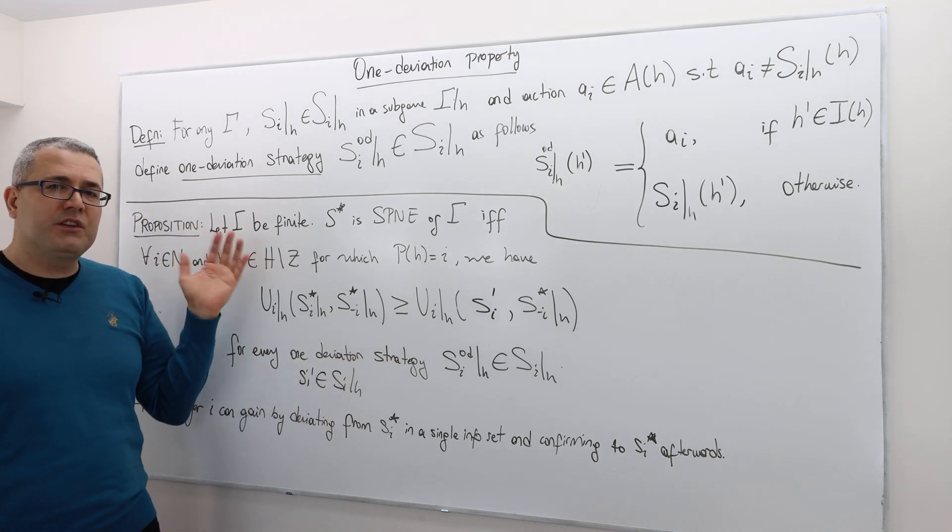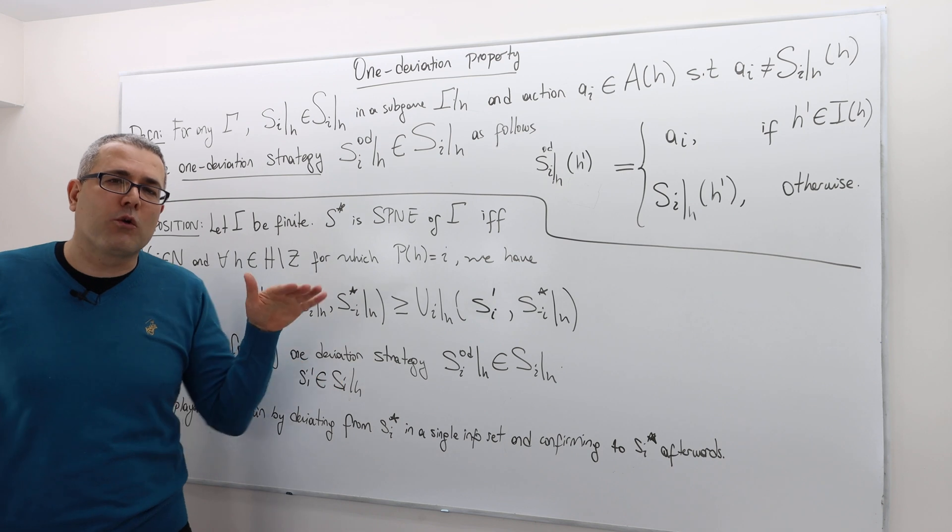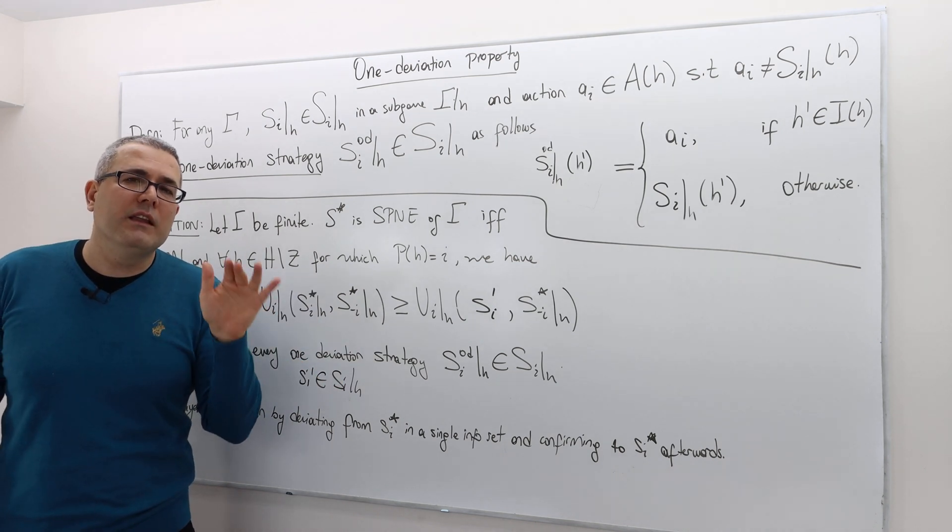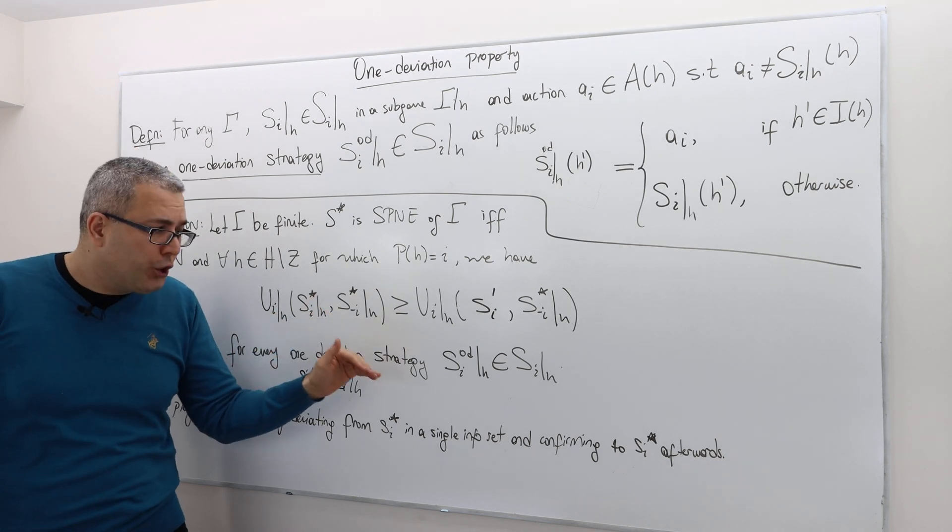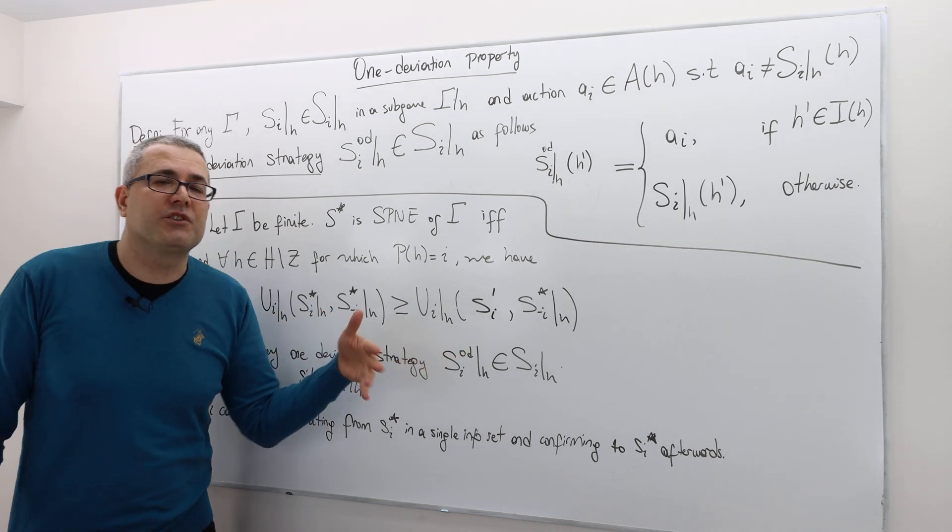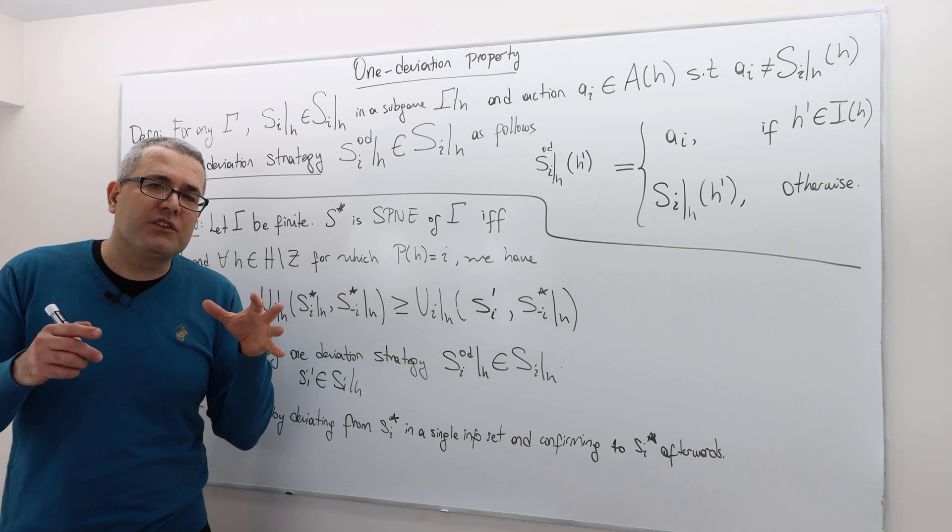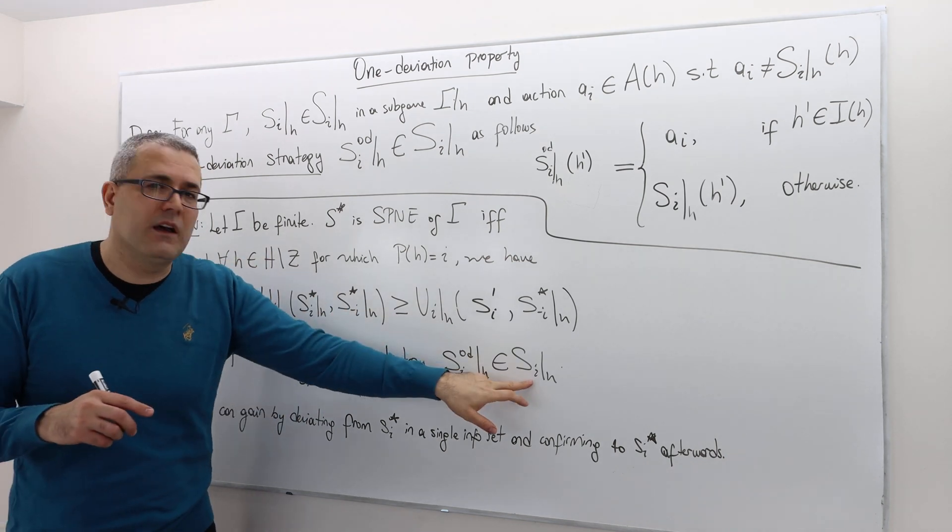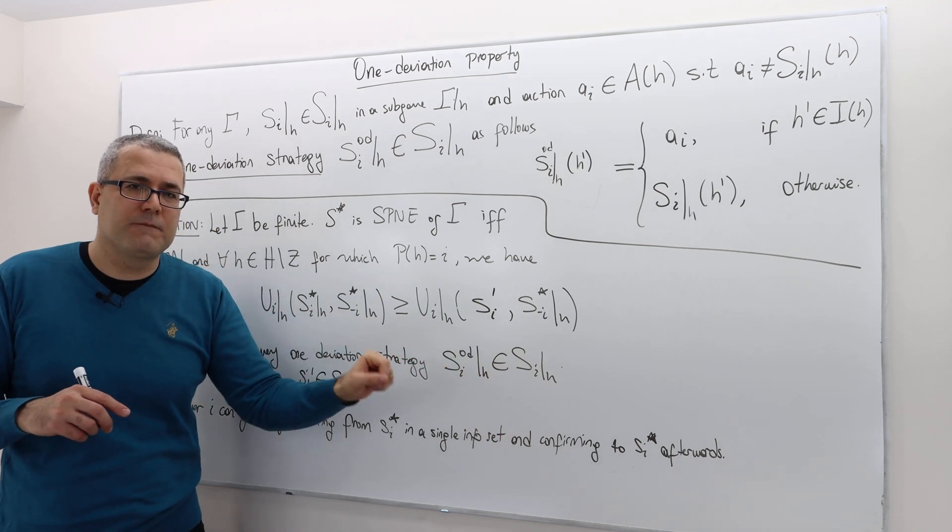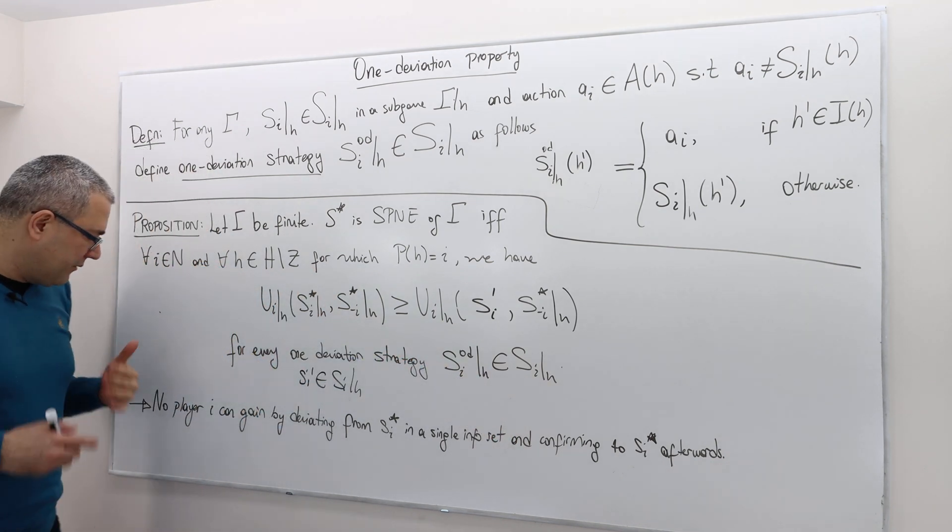This proposition says you don't have to worry about all possible deviations. You only should look at deviations to one deviation strategies and one deviation strategies are clearly narrower set of continuation strategies. So intuitively,